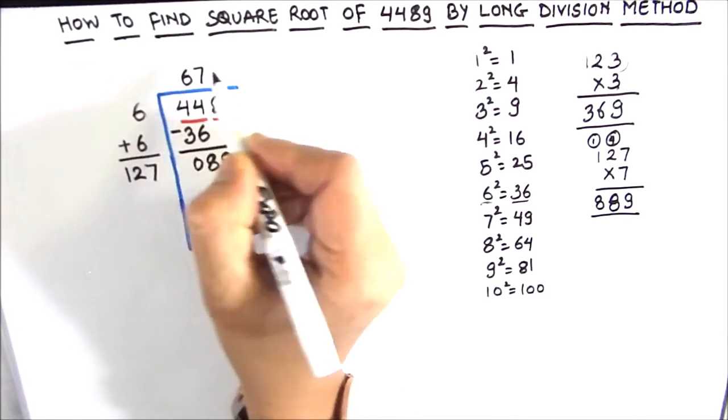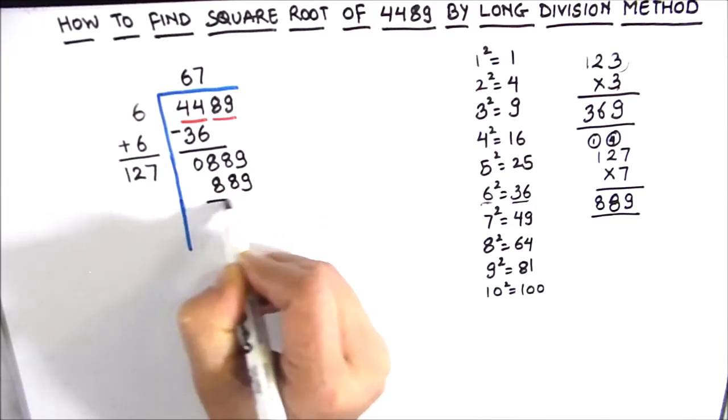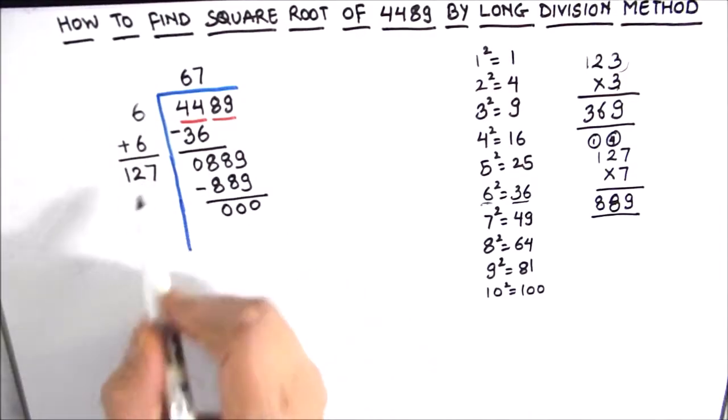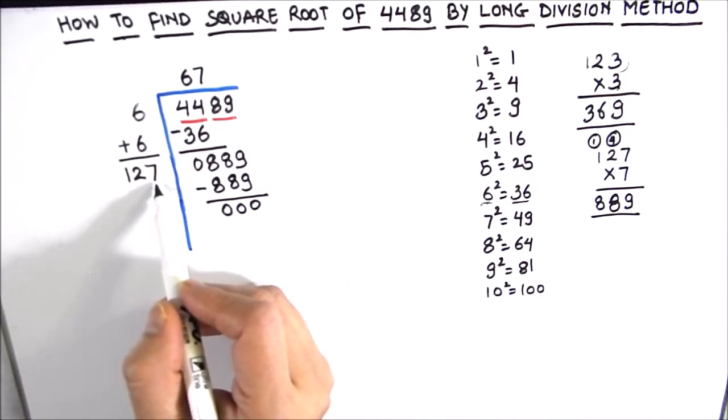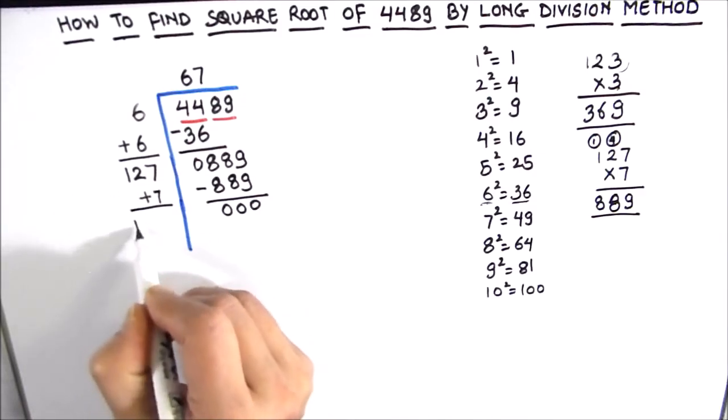As we are annexing 7, the quotient will also be 7. And the product we got is 889, which we are going to subtract. So our remainder is 0. As we annex the number 7 here, we have to add 7 here too for the next divisor. So this will be 134.